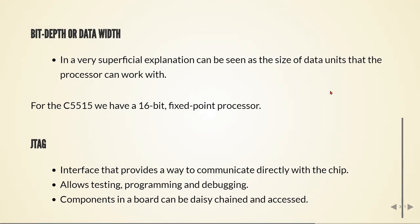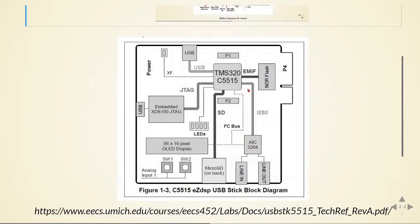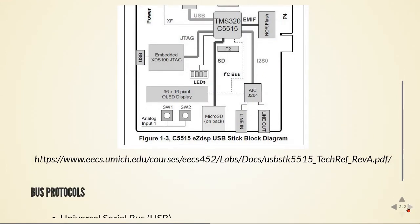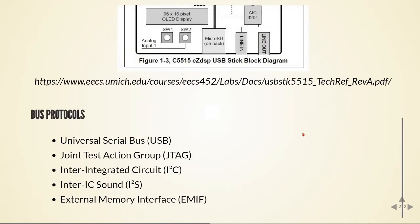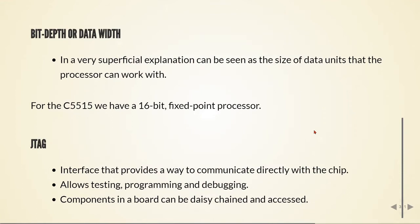Another important thing to note is the JTAG. Here in this block diagram we've seen that there is a JTAG interface. JTAG stands for Joint Test Action Group. It's an interface that provides a way to communicate directly with the chip, and it allows testing, programming, and debugging. Also, components on the board can be daisy-chained and accessed through it.